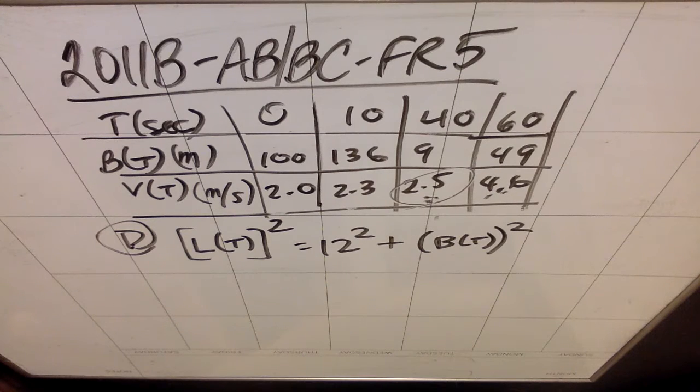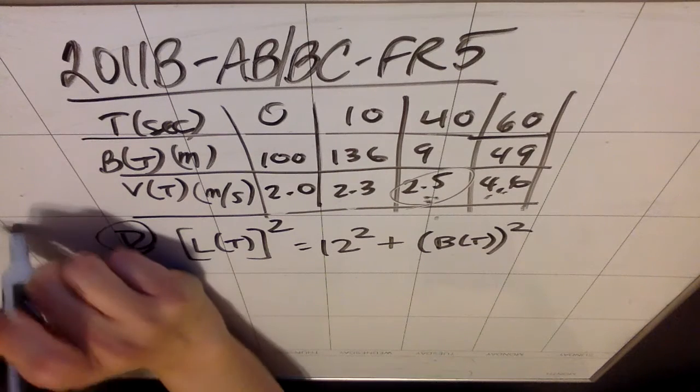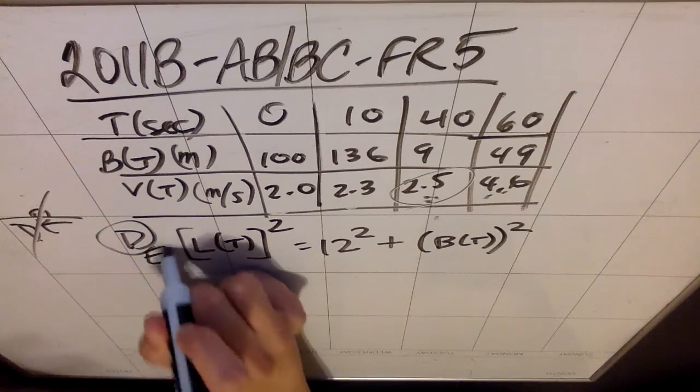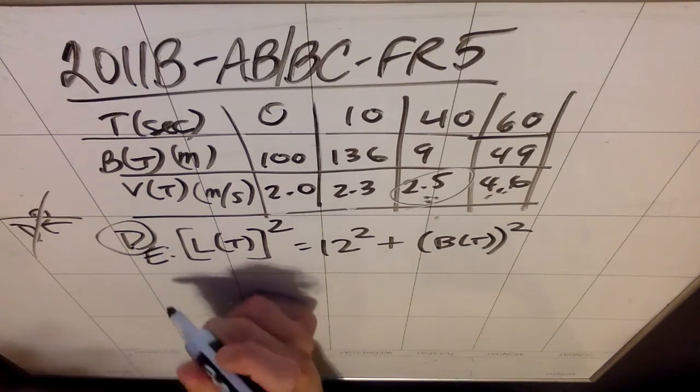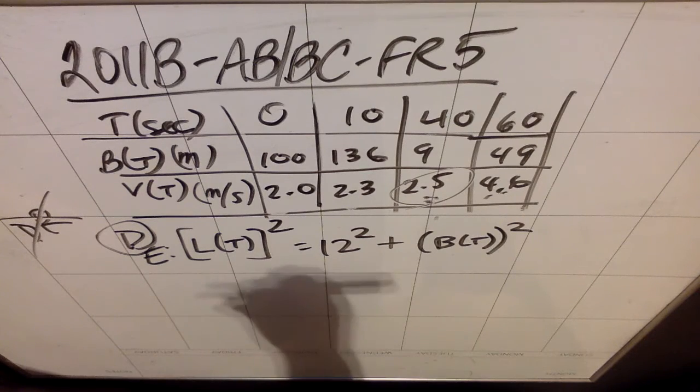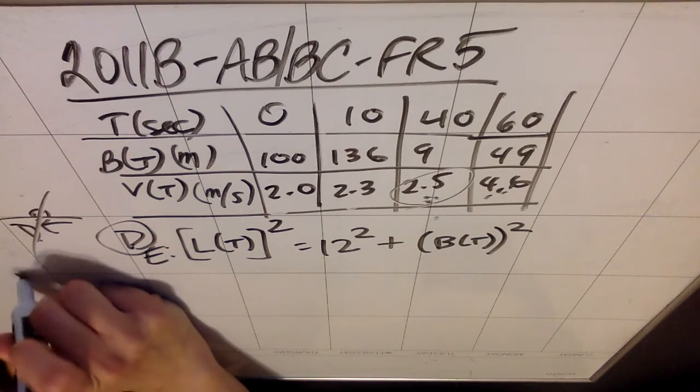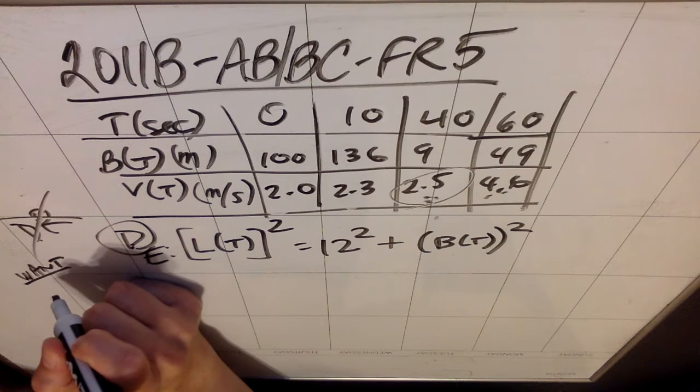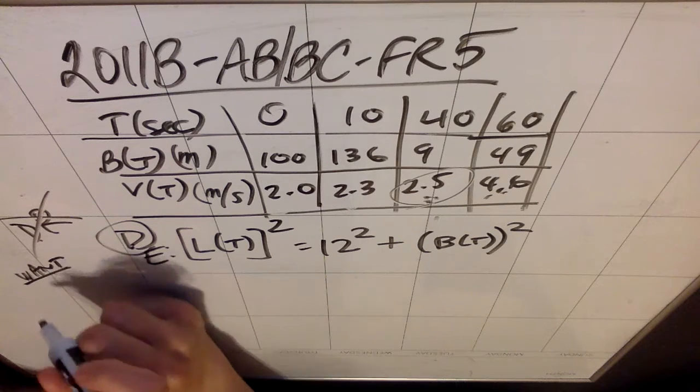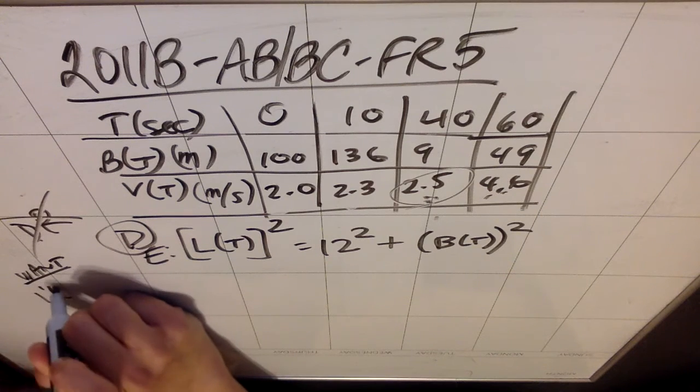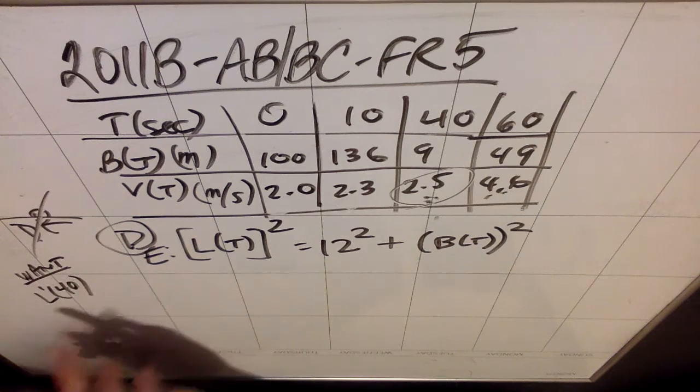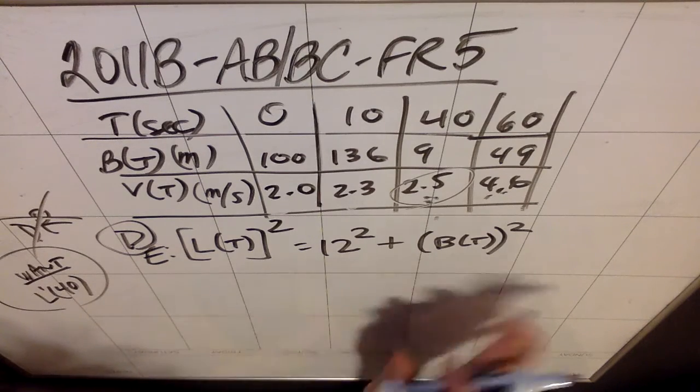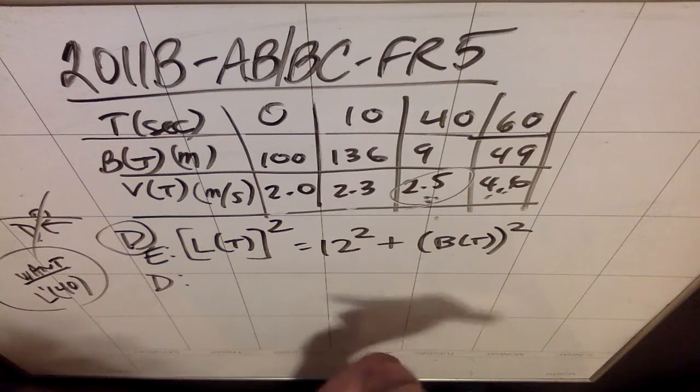When we do related rates, we usually draw a diagram and label rates. But here there's no point because we already were given the equation, which is really the whole goal of the diagram and the rates. I'm then going to derive the equation with respect to t. What they want in this problem, they want what rate is the distance between Ben and the light, which we called L(t). So they want L'(40). They want the rate at which L is changing, which would be L', at 40. That's the thing they want. Let's go ahead and derive this thing with respect to time and see what happens.